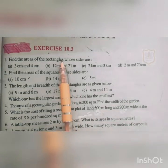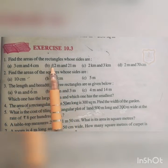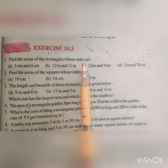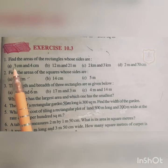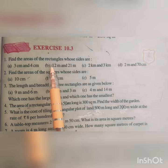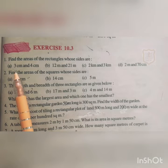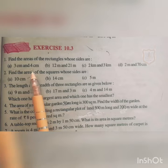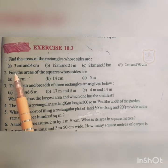Find the area of the rectangles whose sides are given. We have to find out the area. The first rectangle has sides 3 cm and 4 cm. The length is given as 3 cm and the breadth is 4 cm. So we will first work out the area of this rectangle.